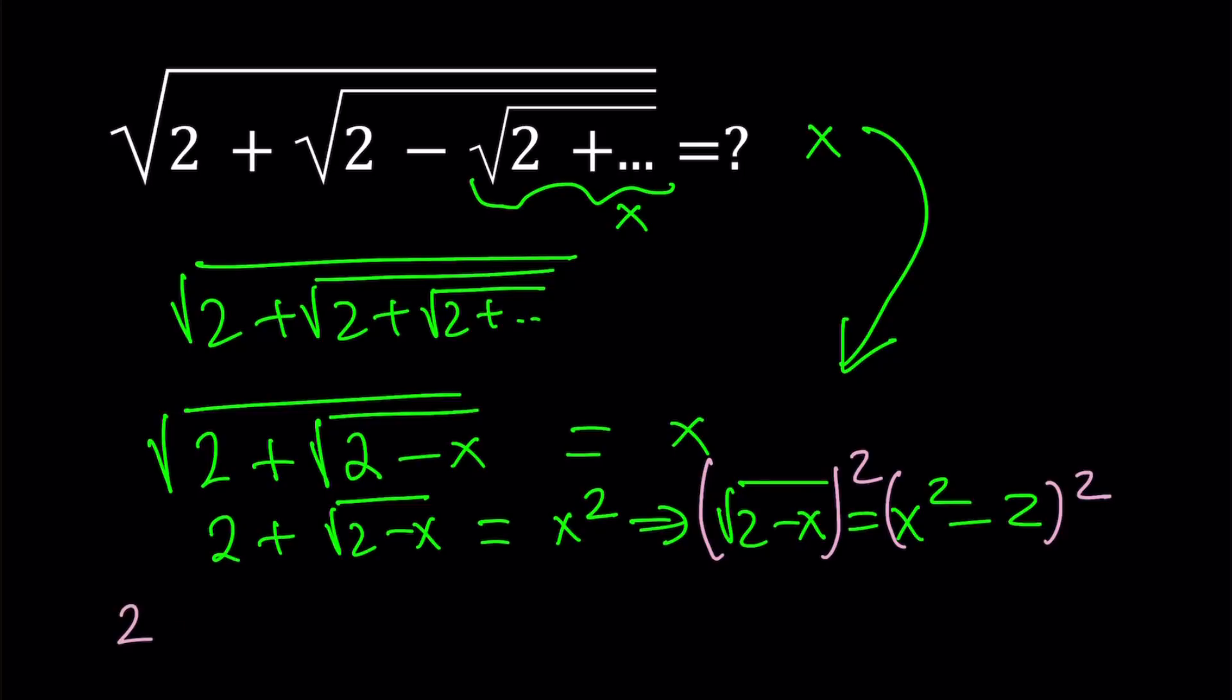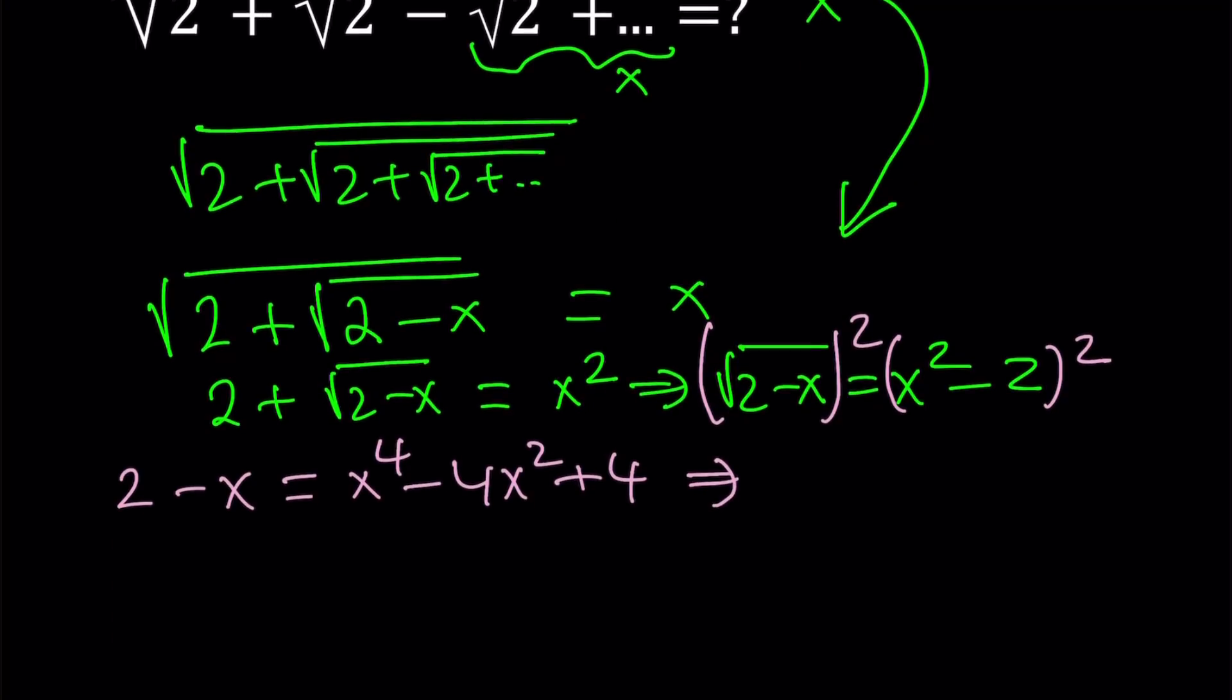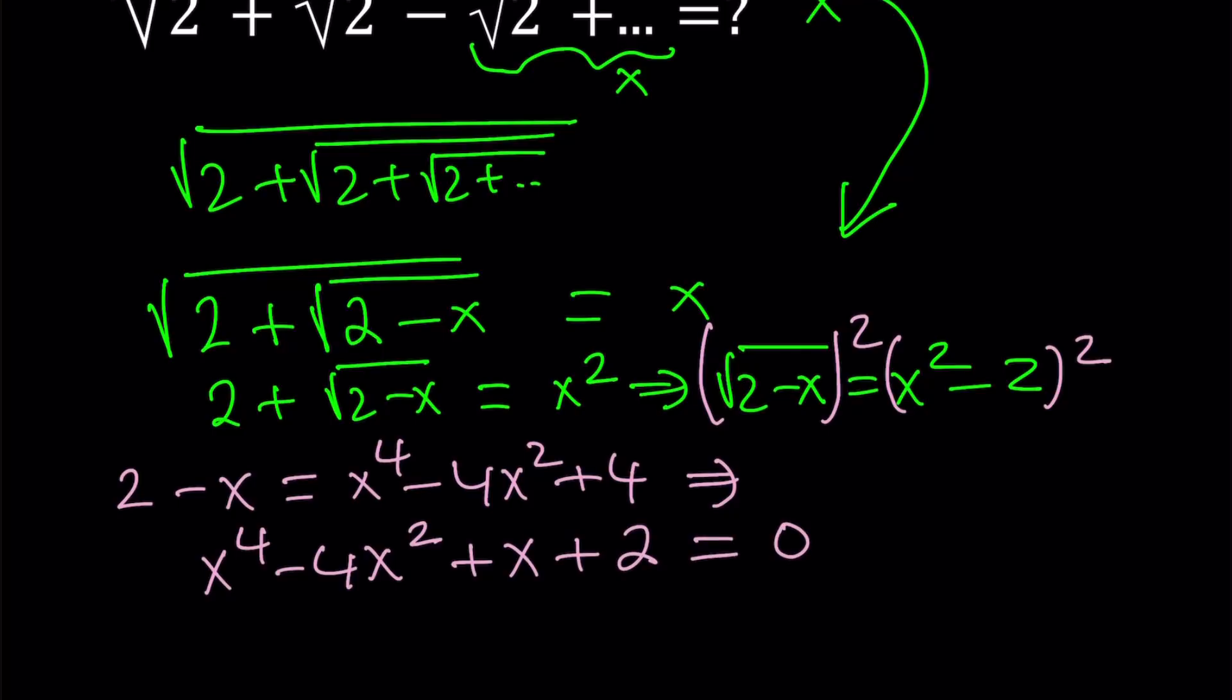So by squaring both sides, we get the following: 2 minus x equals x to the fourth minus 4x squared plus 4. And if I arrange the terms, I'm going to get a quartic equation here. And that quartic equation is going to look like the following: x to the fourth minus 4x squared plus x plus 2. So this is a quartic equation.